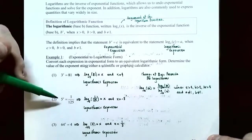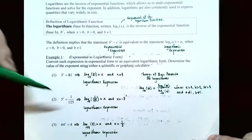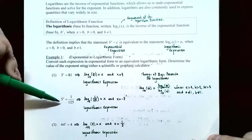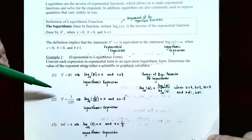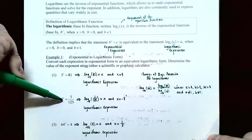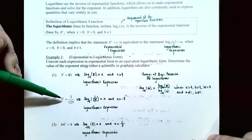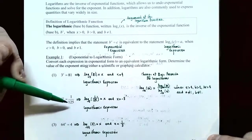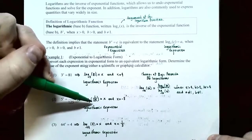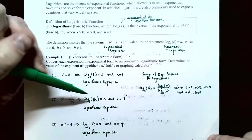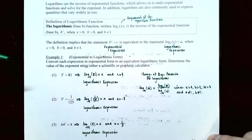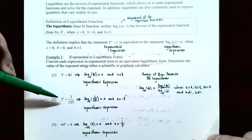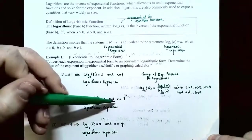Part 2: 5 to the x power equals 1 divided by 125. Convert this to a logarithmic expression. This is a base 5 exponential expression, so it becomes log base 5 of (1/125) equals x. To figure out what x is: what is the power on base 5 that gives you 1 divided by 125? It needs to be negative 3.